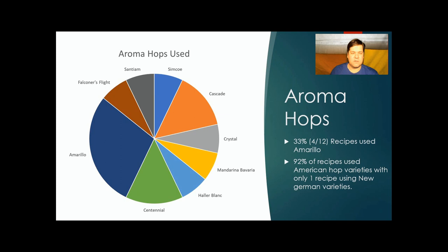On aroma hops, Amarillo is the clear winner here, with 33% of the recipes using Amarillo. Other big ones were Centennial and Cascade, that citrus punch, grapefruit, really fits in well with the style. 92% of the recipes used new American varieties over the German varieties of hops. One recipe used Haller Blanc and Mandarina Bavaria, going to the fruity side as well.